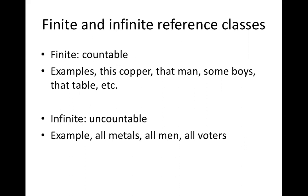Now let's look at the distinction between finite and infinite reference classes, which we covered last class. The finite reference class is a class of countable items — for example, this copper, that man, some boys, that table. The infinite reference class is a class of uncountable items — for example, all metals, all men, all voters, and so on.